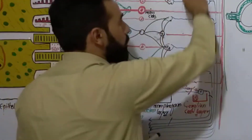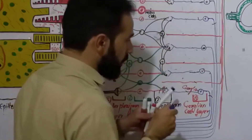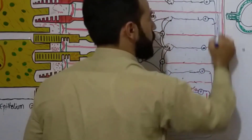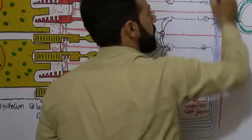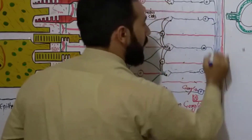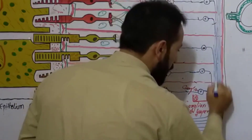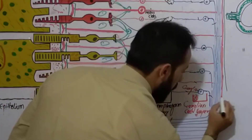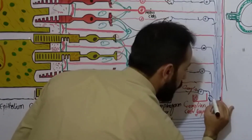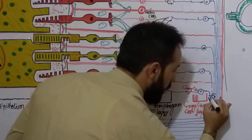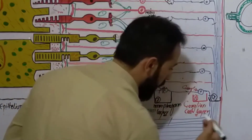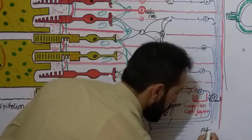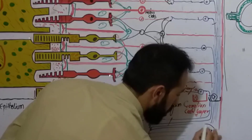Then from all the ganglion cells, these fibers are uniting together and want to go out of the eye. So these fibers make a layer here, which is called the fiber layer — the ninth layer of the retina. This layer contains all the fibers of the ganglion cells. This is called the fiber layer.